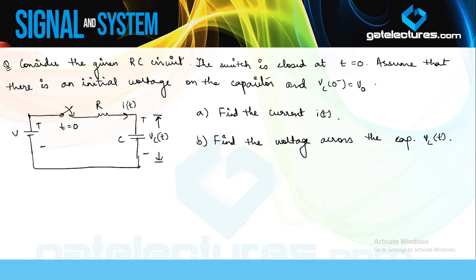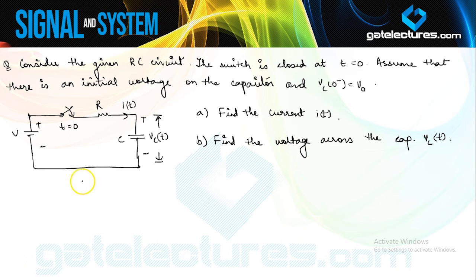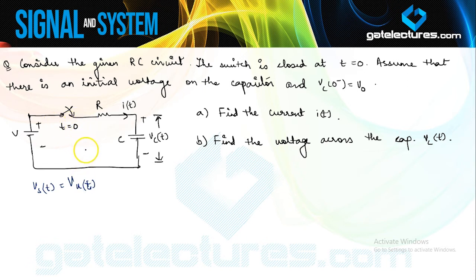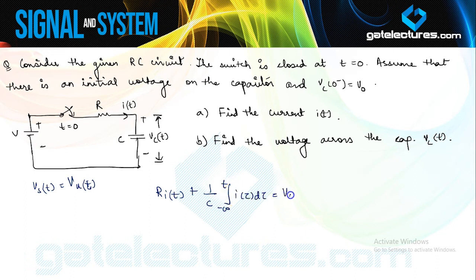The current I(t) is going to be a function of time, not a certain fixed value. They also ask you to calculate the voltage across the capacitor, which is also a function of time. Since the switch closes at t = 0, the source voltage V_s(t) can be written as V·u(t). The KVL equation governing the circuit is: R·I(t) + (1/C)·∫₋∞ᵗ I(τ)dτ = V_s(t).